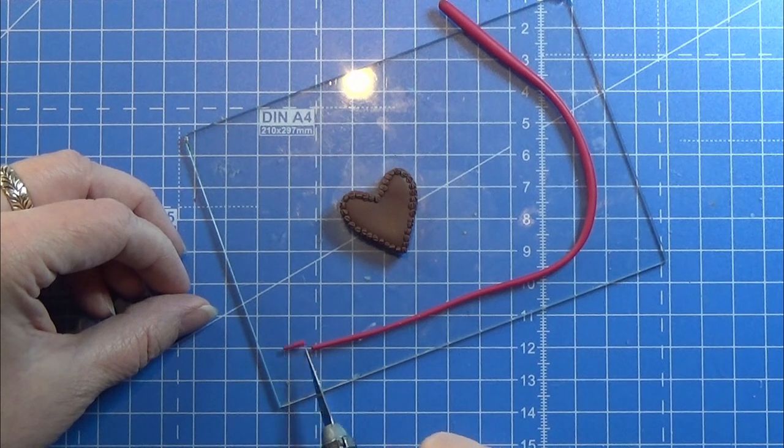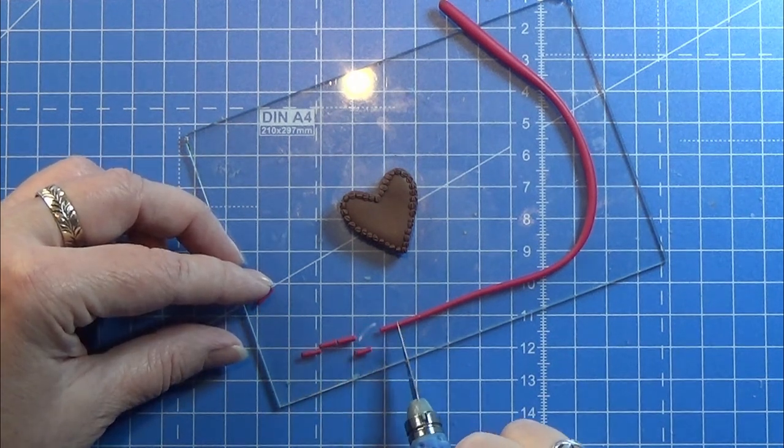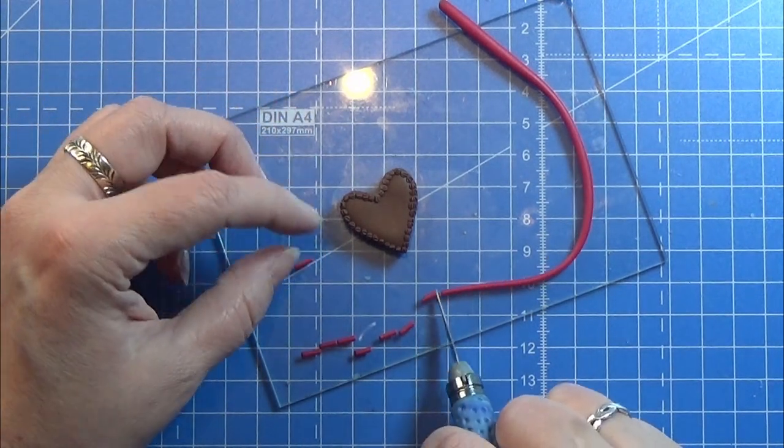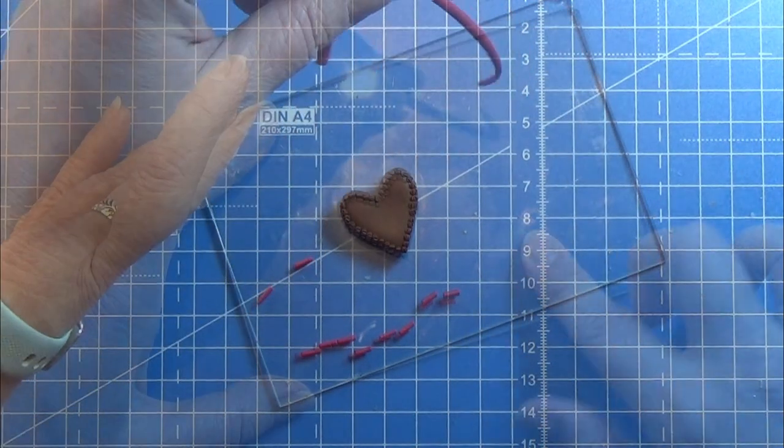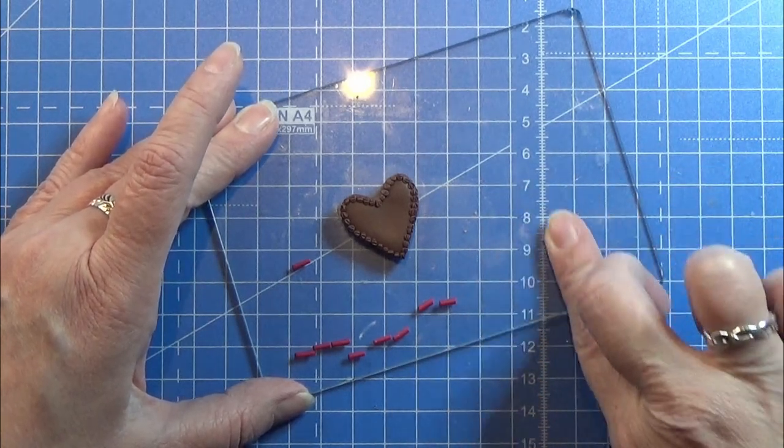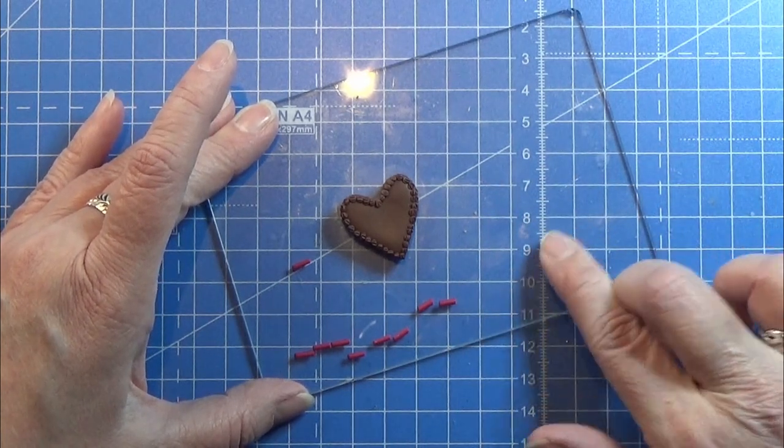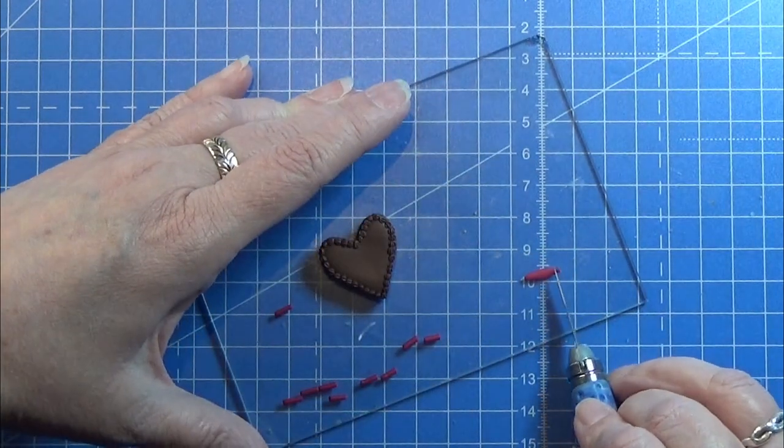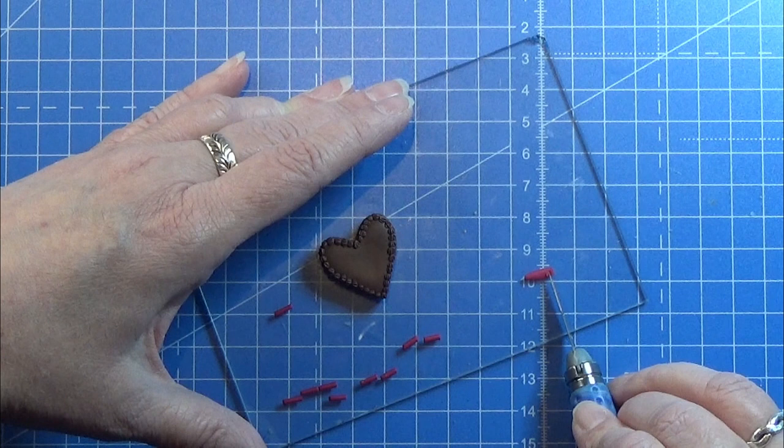Then I took red clay and rolled a snake of it. I'm cutting out 10 pieces—I want 10 roses, but you can do more if you want. I take one of these pieces, roll it and flatten it out, then carefully lift up one of the tips and...